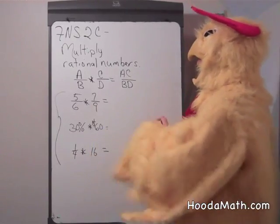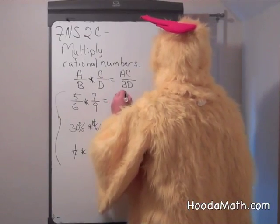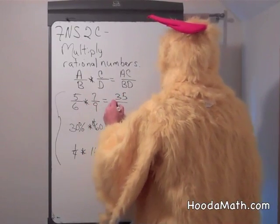Five sixths times seven ninths will equal, yes, we multiply five times seven and six times nine.